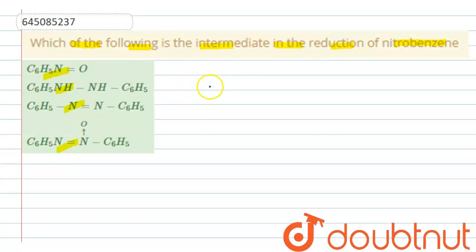We know students, nitrobenzene on reduction forms aniline. This we know, on reduction forms aniline. So 6H, therefore it forms aniline plus 2H2O.